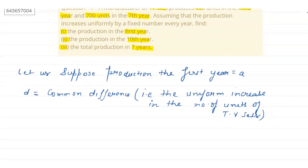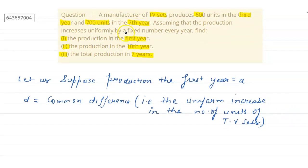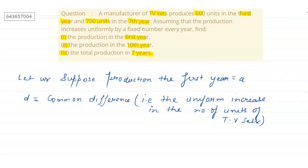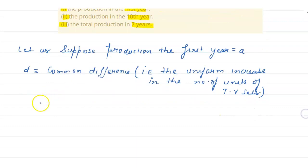So according to question, if d is the common difference and it is uniform and a is the production in the first year, so this is an AP. According to question, the production in the third year is given as 600. So t3 can be written as a plus 2d equals to 600. Mark it as equation number first.